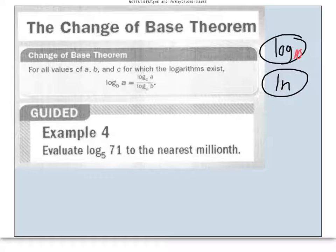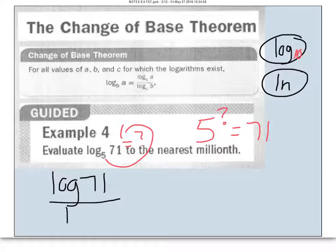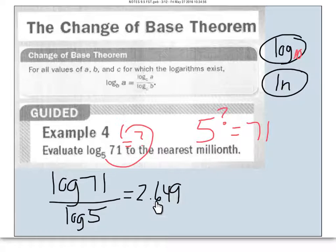Let's look at log base 5 of 71. Set it equal to something and rewrite: 5 to some power equals 71. Since 5 squared is 25 and 5 cubed is 125, the answer is somewhere between 2 and 3. Using the change of base theorem, write log of 71 divided by log of 5 — both using the base 10 button. In your calculator, type log(71) divided by log(5), and you get approximately 2.649, which makes sense because it's between 2 and 3.